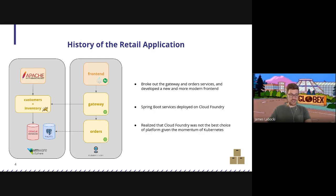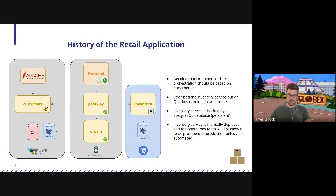We took the inventory service and split it out into a Kubernetes environment. The nice thing is that we could actually bring our database on Kubernetes because Kubernetes could handle persistence. We developed the inventory service using Quarkus. The big challenge we have is that we've manually deployed this inventory service. Our development teams have a manual way of deploying it. In order to promote this into our production Kubernetes clusters, we're going to have to re-platform it, automate the way we do this. They're really trying to embrace a GitOps method for development.